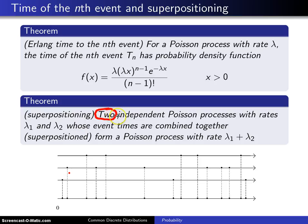This generalizes to more than two Poisson processes. For example, we could have three independent Poisson processes with rates lambda 1, lambda 2, and lambda 3. When you combine those together, you get a Poisson process with rate lambda 1 plus lambda 2 plus lambda 3.